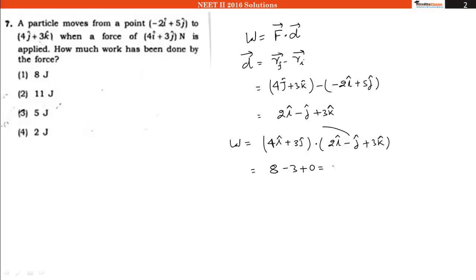Which is equal to 5. So 5 J will be our answer, which is option number 3.